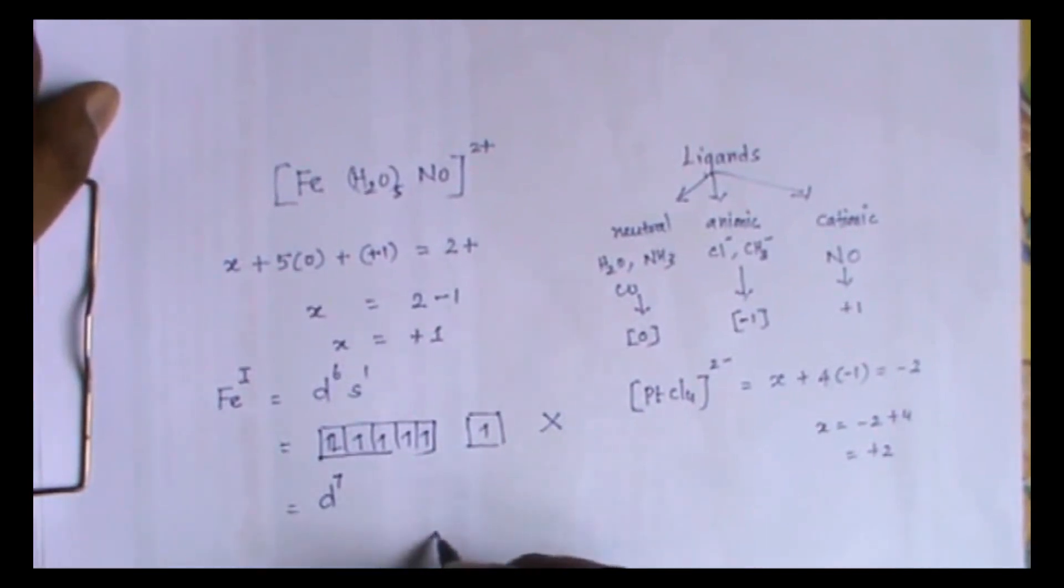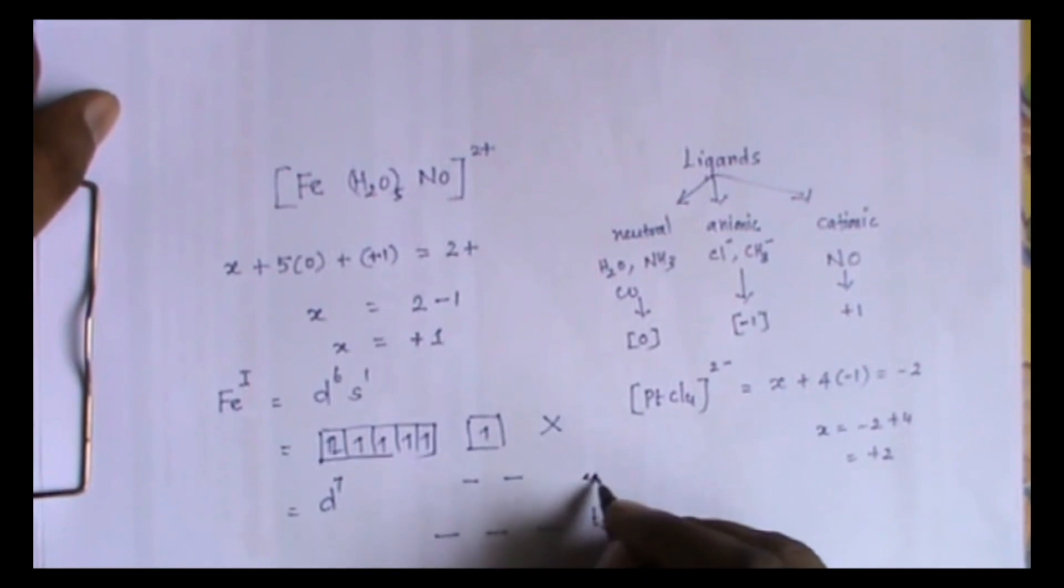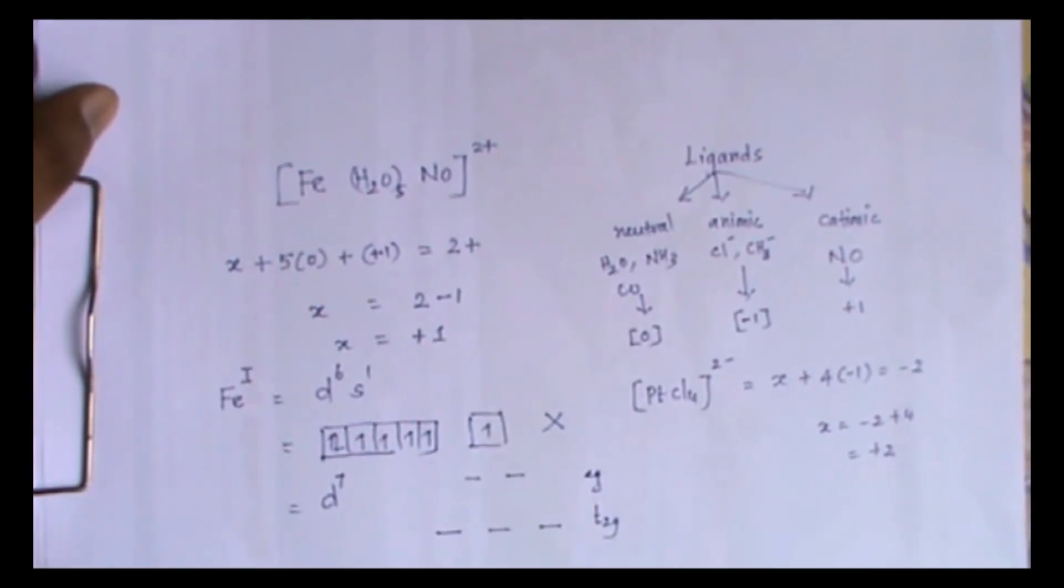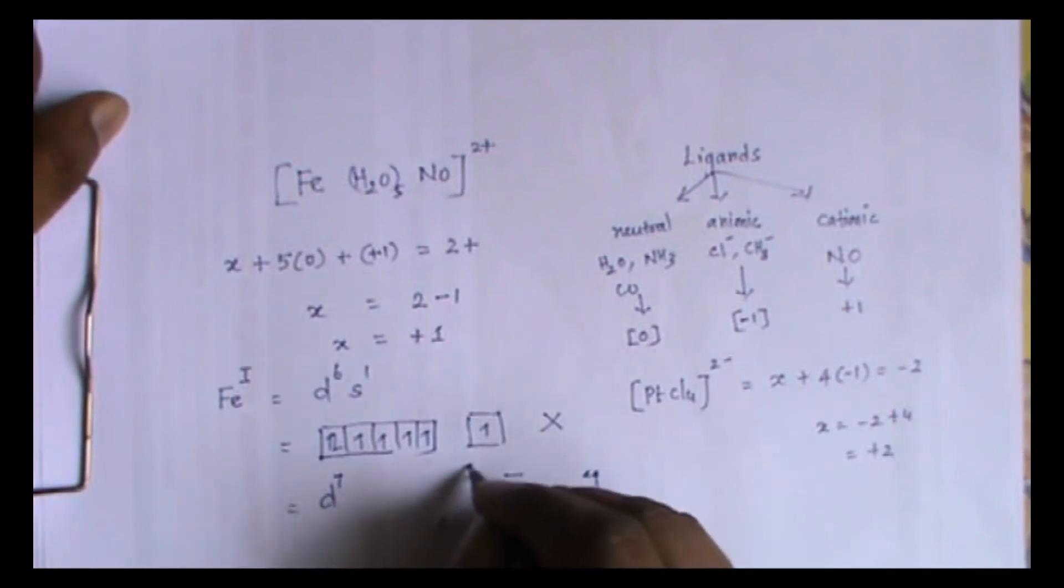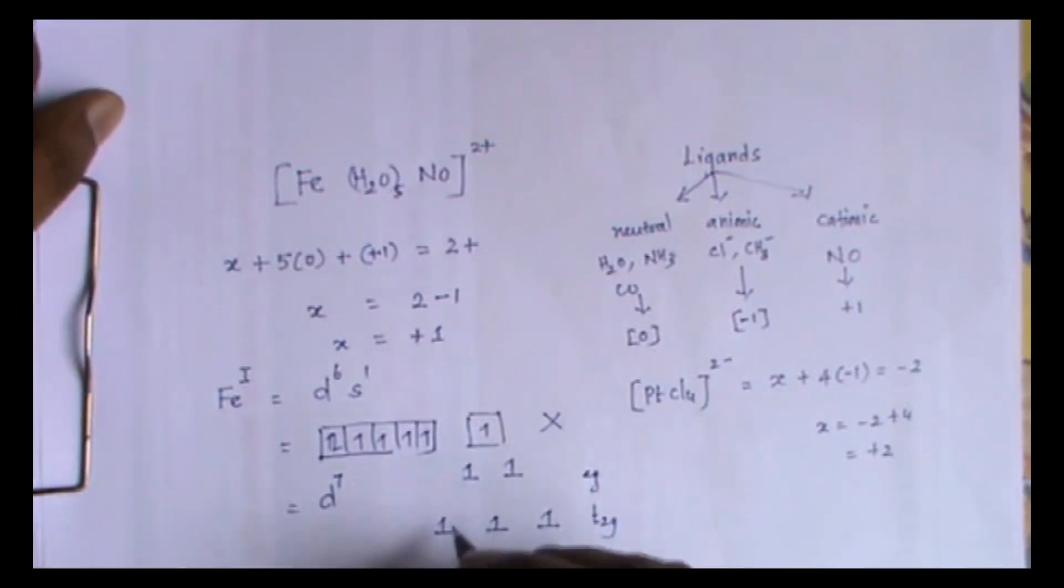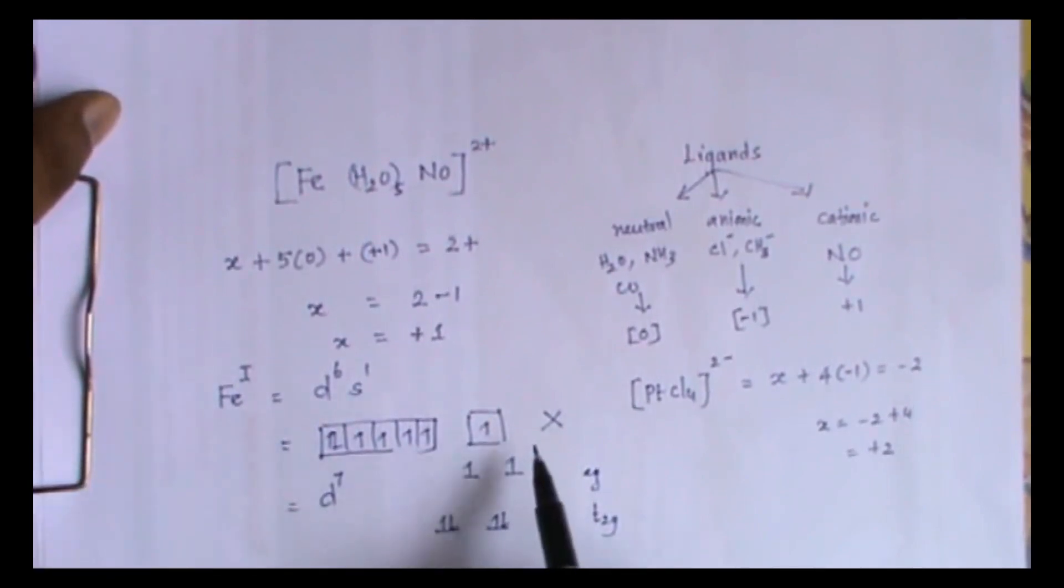Further in the presence of ligands, the d orbitals are getting split into t2g and eg. Now let's place the 7 electrons like this. Since water is weak ligand, I place singly then I go for pairing. This is the exact electronic arrangement in this species. You should not follow the previous method. This will give wrong answer.